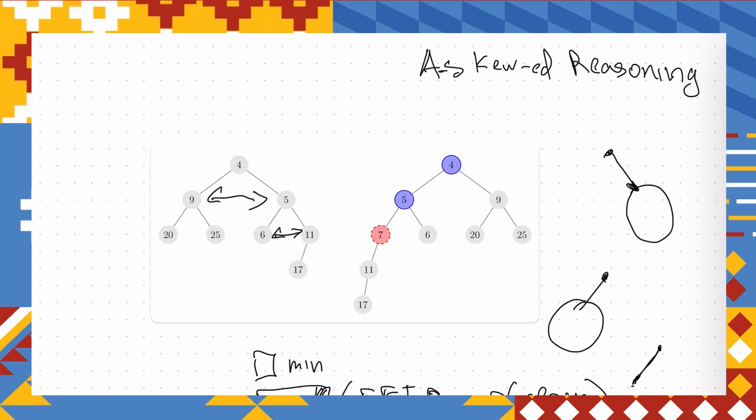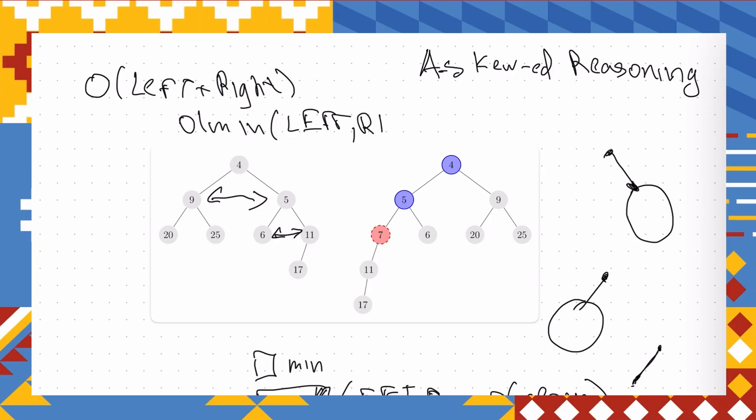This would help us to merge elements not in the time proportional to sum of the sizes, which was described initially, but rather in the time proportional to minimum of the sizes, because we remove elements from both sides in alternate order,